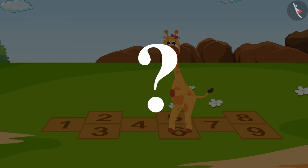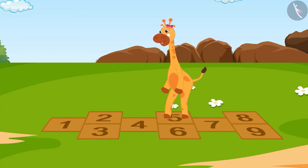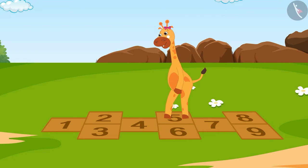Which number comes before 6? 5. Gaffee is standing on box number 5. To go back, she needs to jump on box number 4.